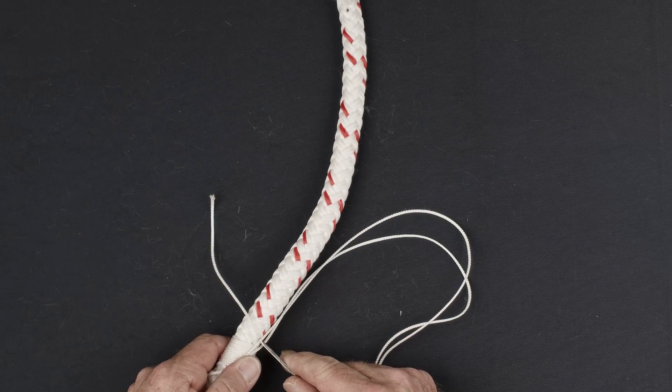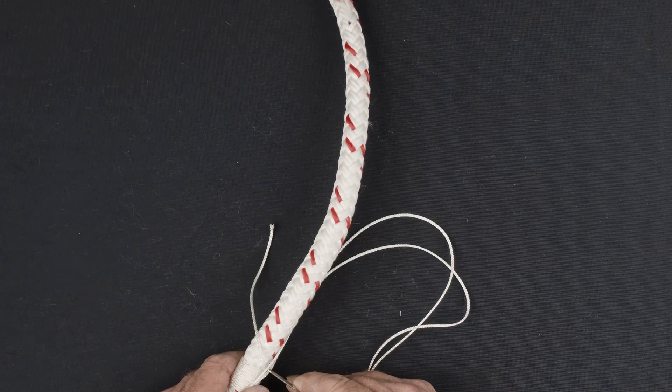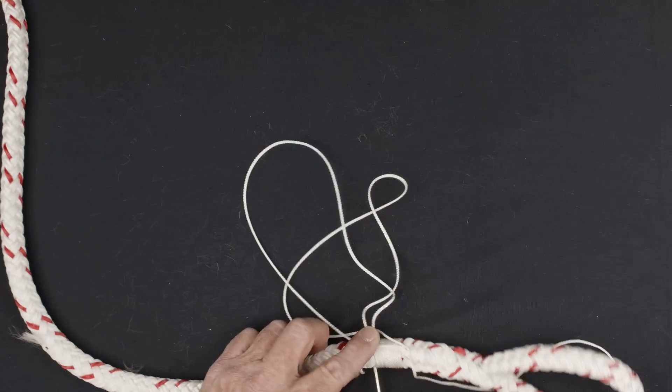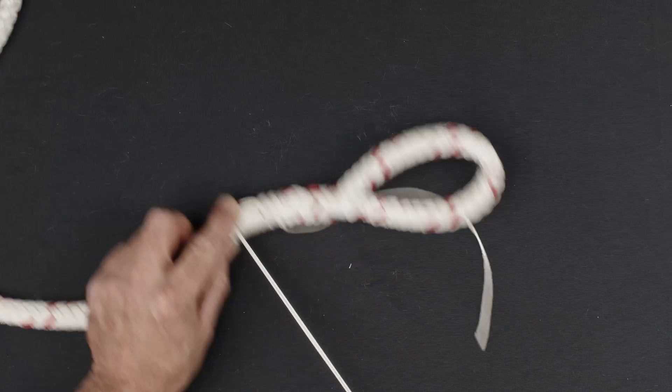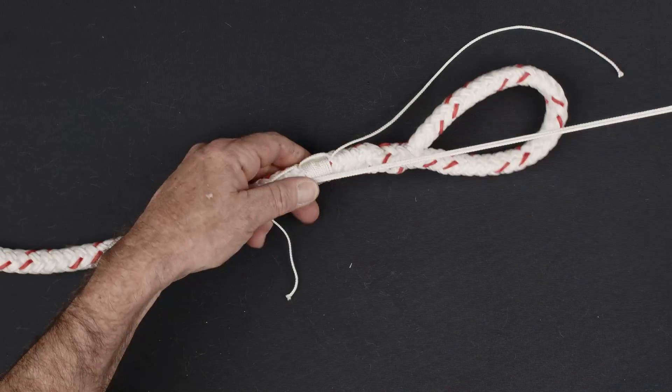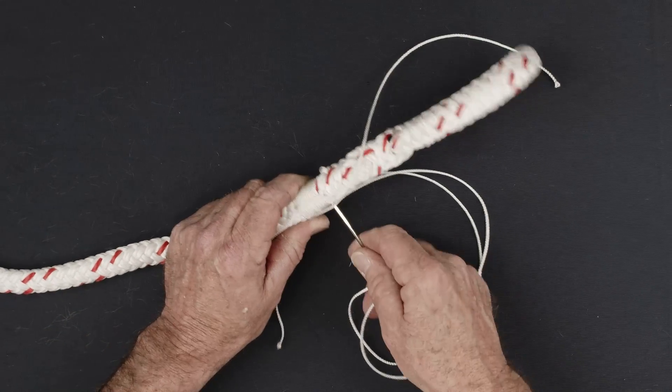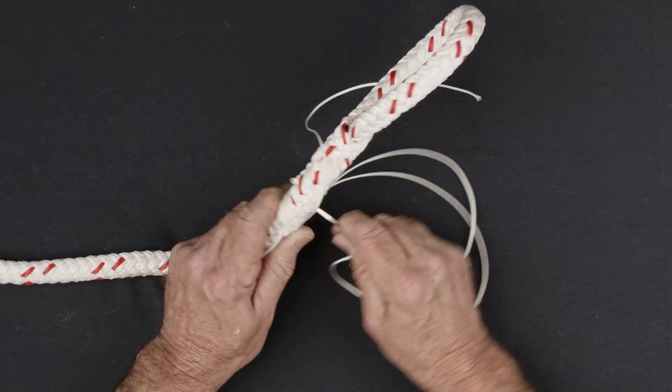At the bottom of the whipping, pass the needle through at a 45 degree angle so it exits the rope in between the two previously formed strands. Pass the needle straight through the rope at the top of the whipping so that it exits in the middle of the two previously formed strands on the opposite side of the rope.